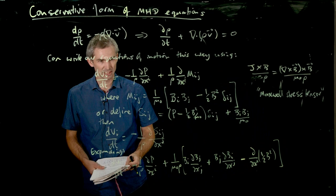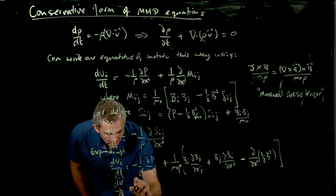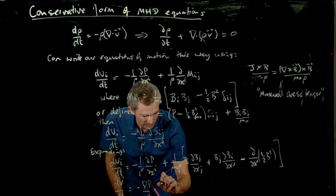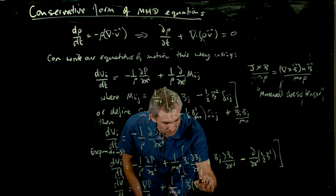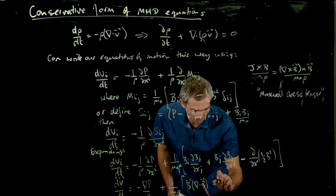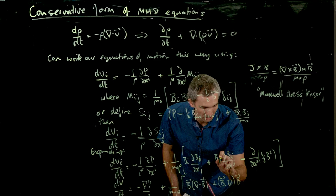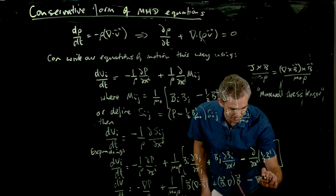Okay, so let's just translate this back into vector format. So in vector format, this is a dv dt. This is a minus grad p on rho. This one gives us a plus one on mu naught rho. Now this term, so the repeated index is here, so this is a b divergence of b. So that term is obviously zero. That's a b dot grad b, because the repeated index is on the b. And this is a minus the gradient of half b squared.